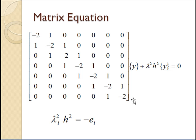And this looks like the equation for the eigenvalues of a matrix. So the eigenvalues of this matrix are defined by this equation as long as we call those eigenvalues e and let them be minus lambda squared h squared.